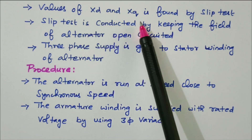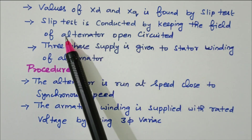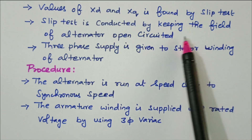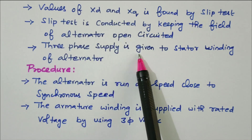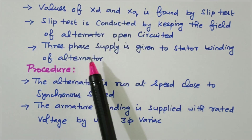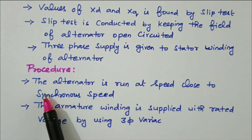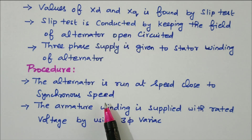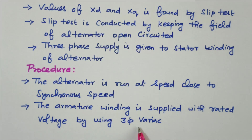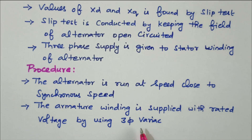The values of Xd and Xq are found by the slip test. The field winding of the alternator is open-circuited and three-phase supply is given to the stator winding through the three-phase variac. The alternator is run at a speed close to synchronous speed using the DC motor. The armature winding is supplied with rated voltage by the three-phase variac.